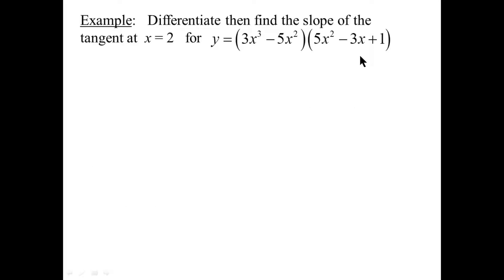Differentiate, then find the slope of the tangent at x = 2 for a more complex function. Of course we could multiply this out and then differentiate it using the previous methods — yes, we could. But we're trying to learn how to use the product rule, so let's do it using the product rule.